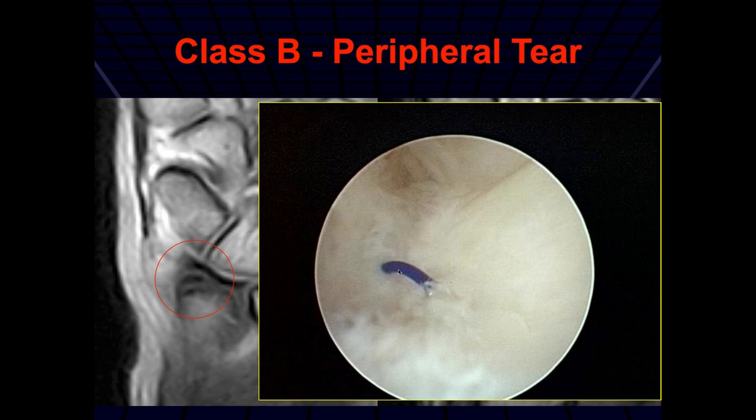On x-ray, you can do stress x-rays and see if there's instability. So there are more than one way to assess these cases. But before arthroscopy, we didn't operate on these.